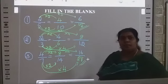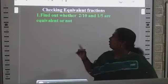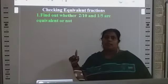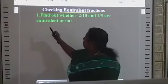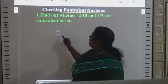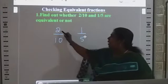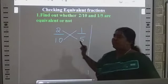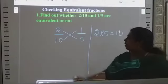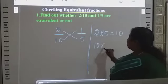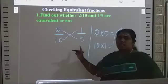Now we understand how to find equivalent fractions. Next, we are going to discuss checking equivalent fractions. Find out whether 2 by 10 and 1 by 5 are equivalent or not. We can check by cross-multiplying the numerator and the denominator — multiply these two numbers and multiply these two numbers. 2 times 5 is 10, and 10 times 1 is also 10. The products are equal, so these two fractions are equivalent.